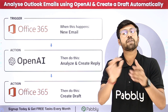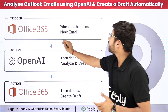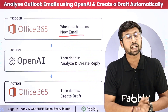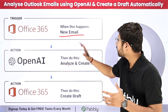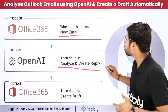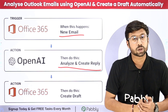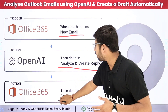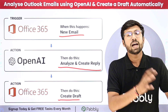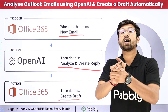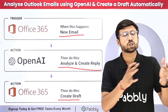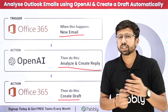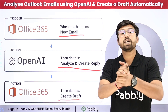Using this automation, whenever you receive a new email in your Outlook account, you can send that same email to your AI platform like OpenAI. OpenAI will analyze that email and generate a reply for it. Then you can send that reply to Outlook or Office 365 and add it as a draft email. At last, you can manually recheck and make changes as per your choice before sending.